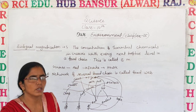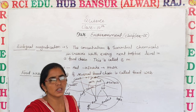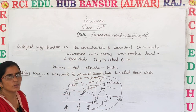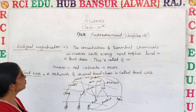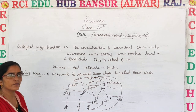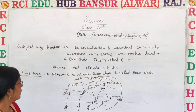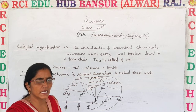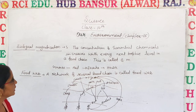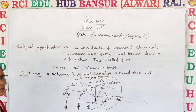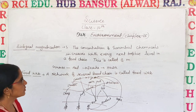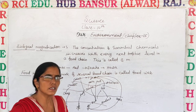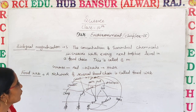Hello students, good morning. Welcome to another online video of RCA Education Hub, Bansur. Let's continue Chapter 15: Our Environment. In the last video we discussed food chain, trophic levels, and transfer of energy. Now let's discuss biological magnification — the concentration of harmful chemicals increases with every next trophic level in a food chain.